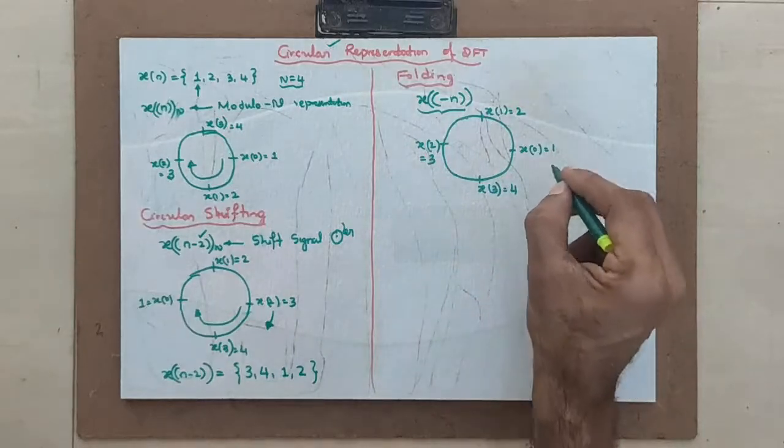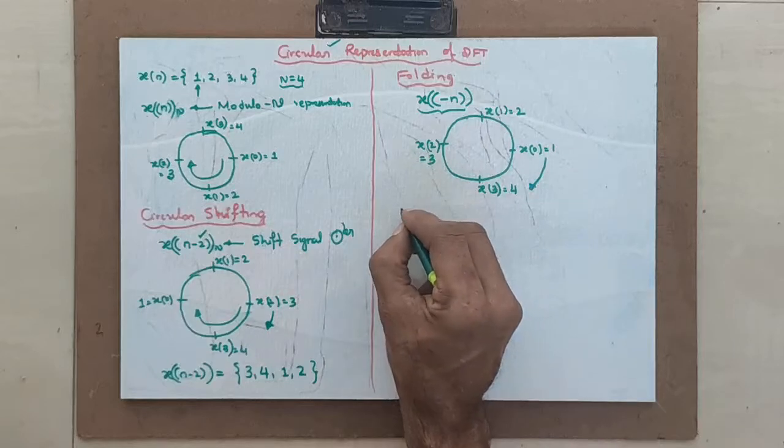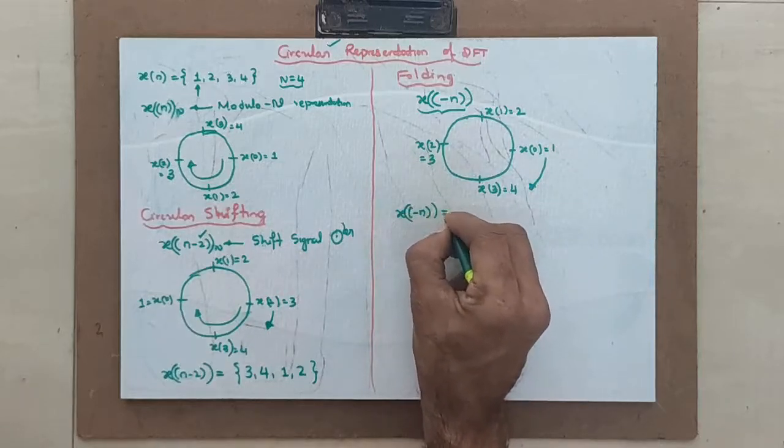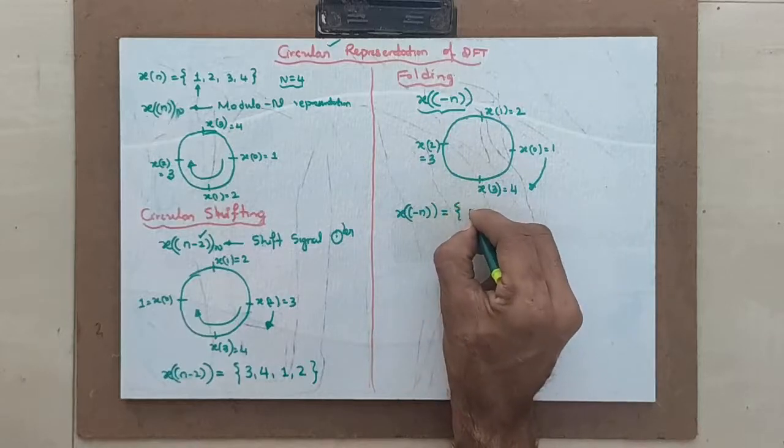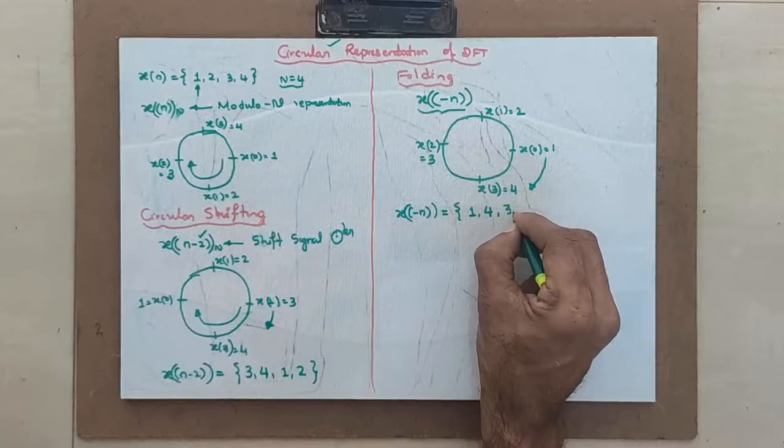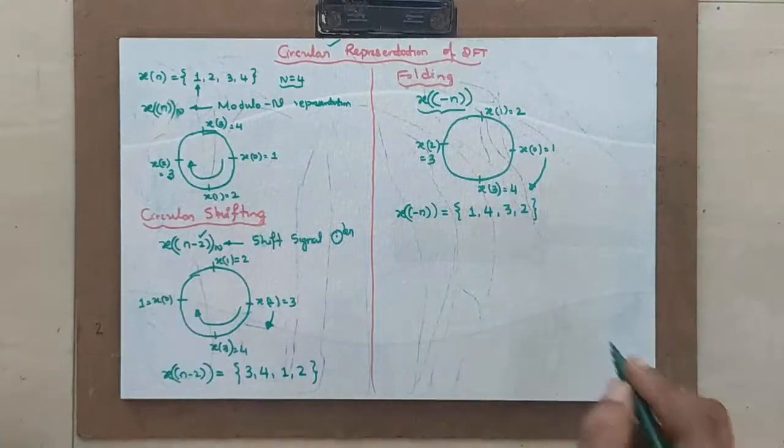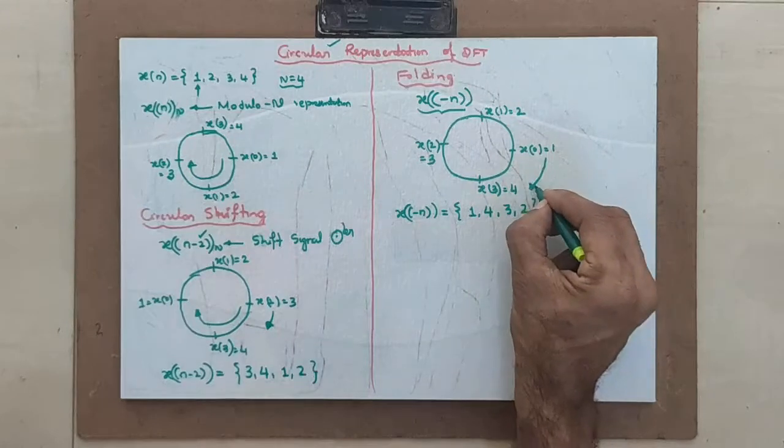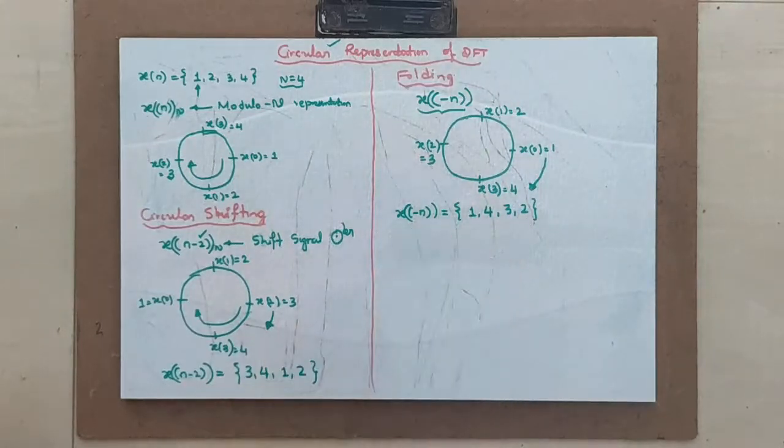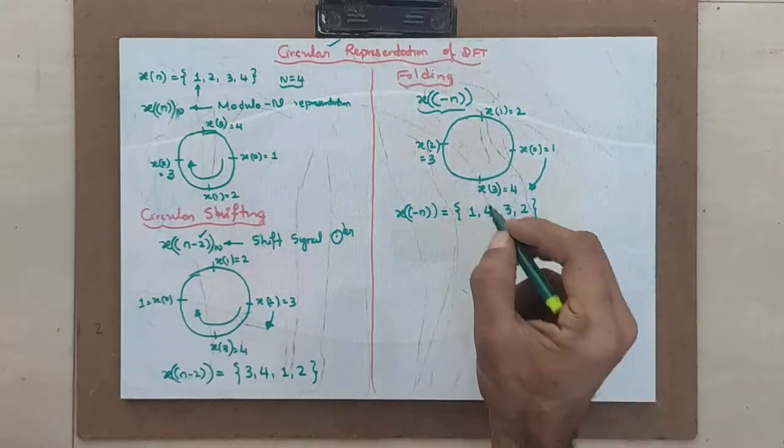But, please keep it in mind that you are reading in this manner. That means, what is the new signal x of minus n? This new signal x of minus n is 1, 4, 3 and 2. This is how you will get the folded signal or it is also called as inverted signal. Folding. This is called as folding.